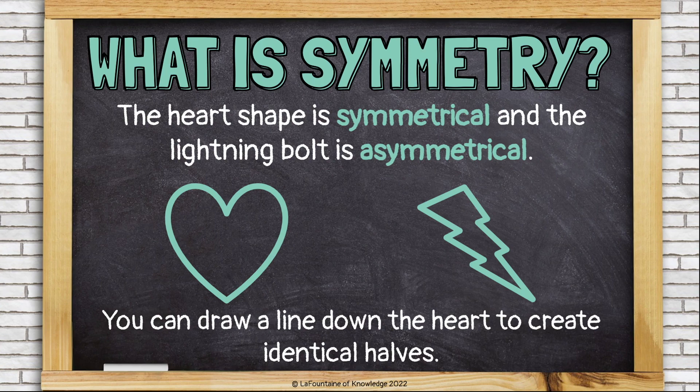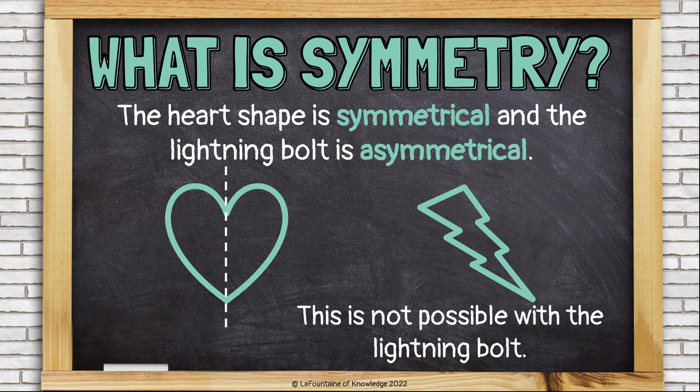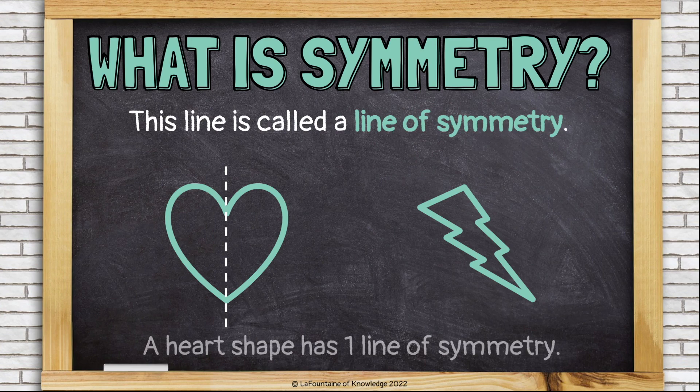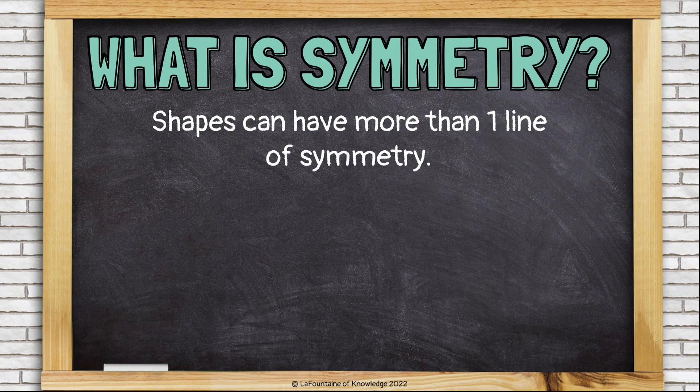You can draw a line down the heart to create identical halves, like this. This is not possible with the lightning bolt. This line is called a line of symmetry. A heart shape has one line of symmetry.